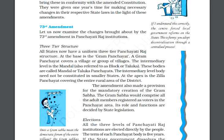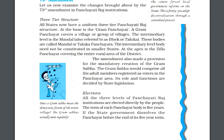Next is elections. At all three levels of Panchayati Raj, these institutions are elected directly by the people. Their term will be for five years.